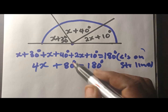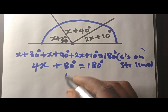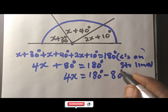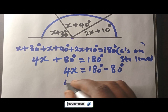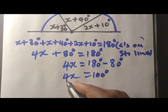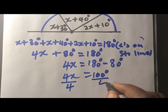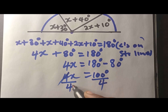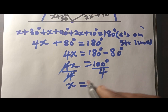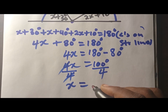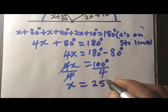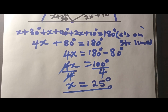The next move: take 80 to the other side, so we are left with 4x equals 180 minus 80. Simplify: that's 100 degrees. Then divide both sides by 4. Why are we doing this? Because we want this 4 to leave x alone. How many times does 4 go into 100? We get x = 25 degrees.